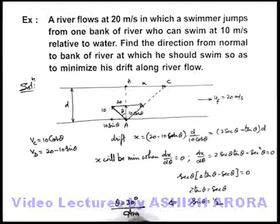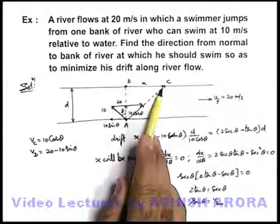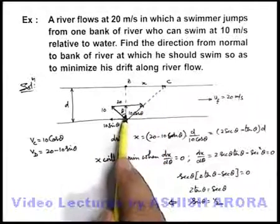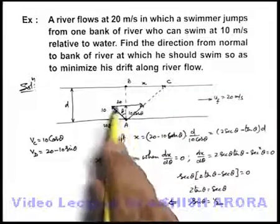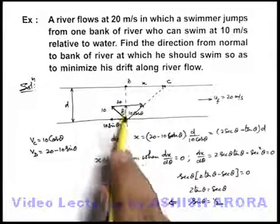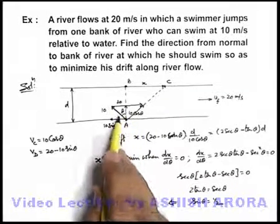That is the answer for this problem. To minimize the drift along the river flow, the swimmer has to swim at an angle of 30 degrees to the normal direction from one bank of the river.